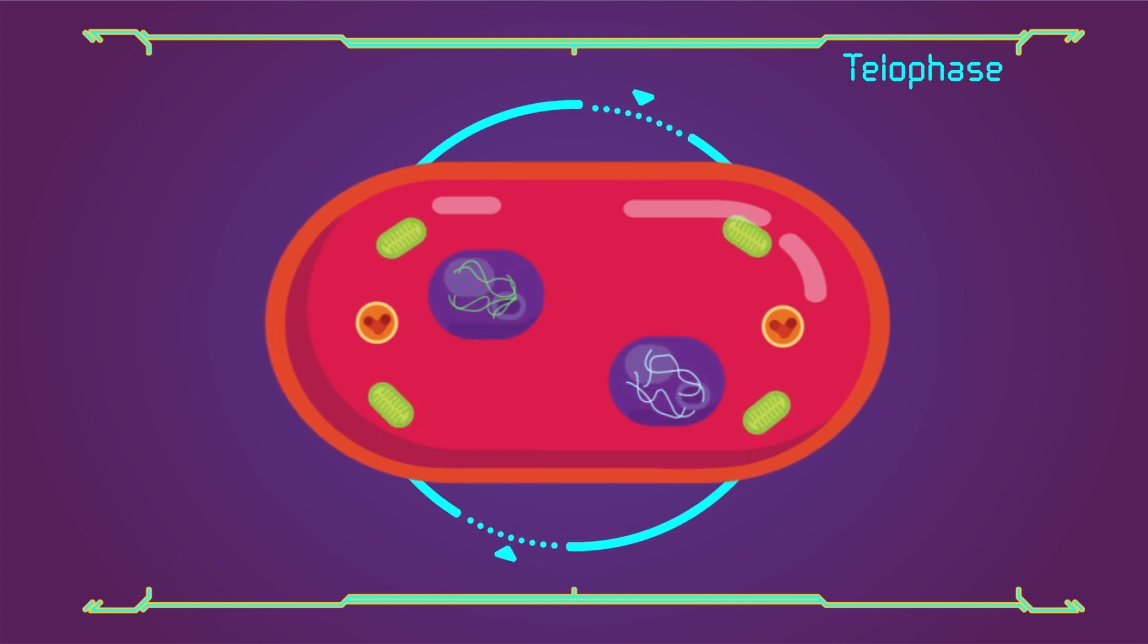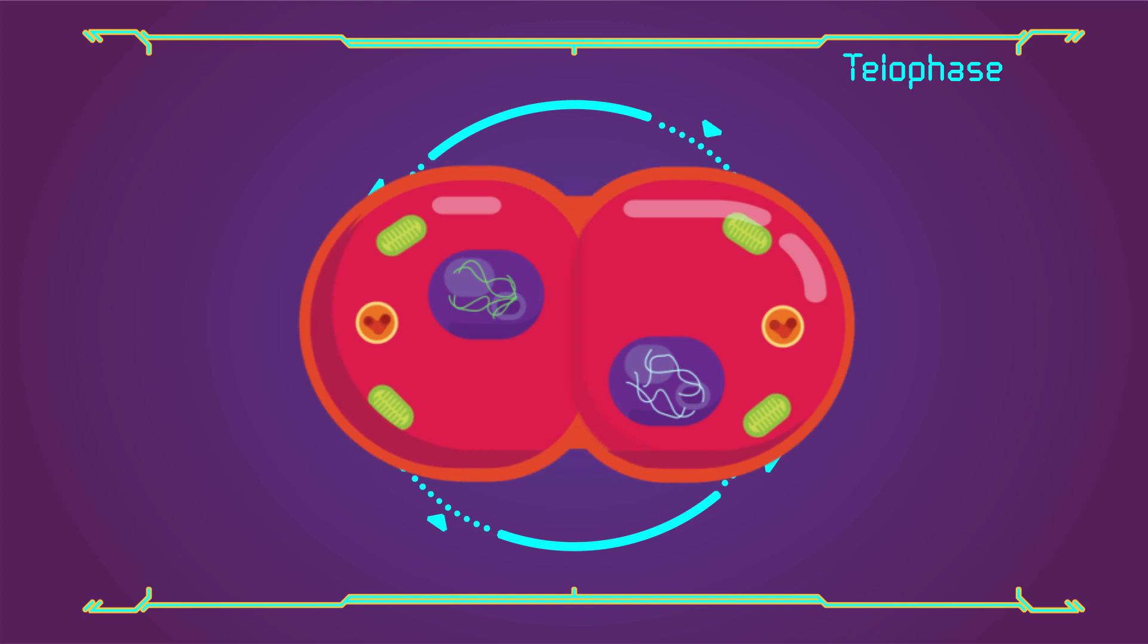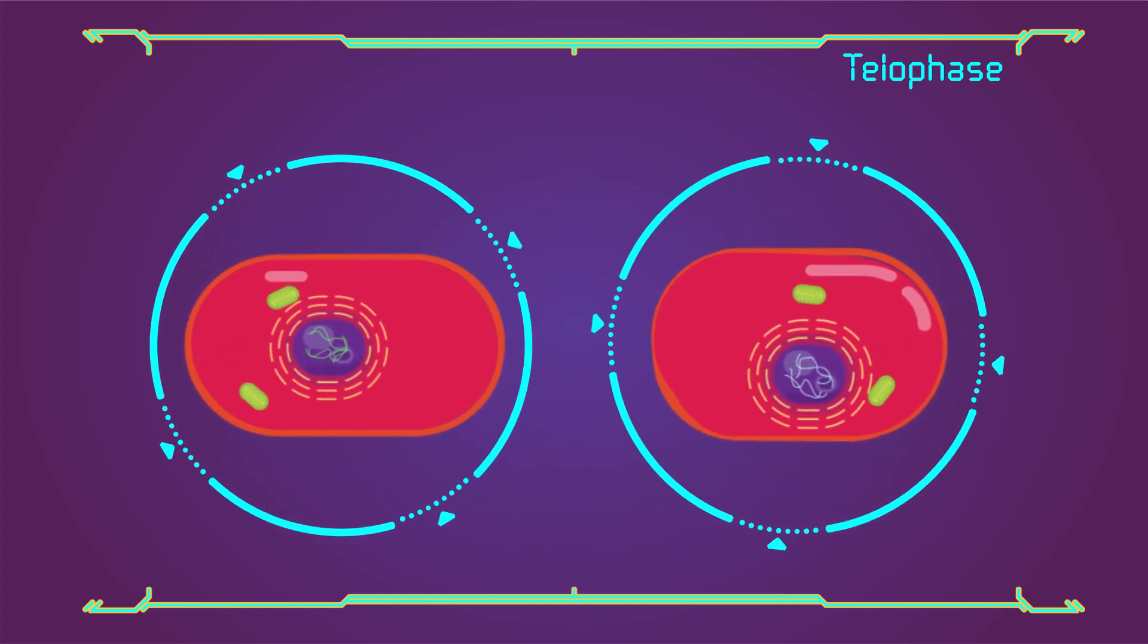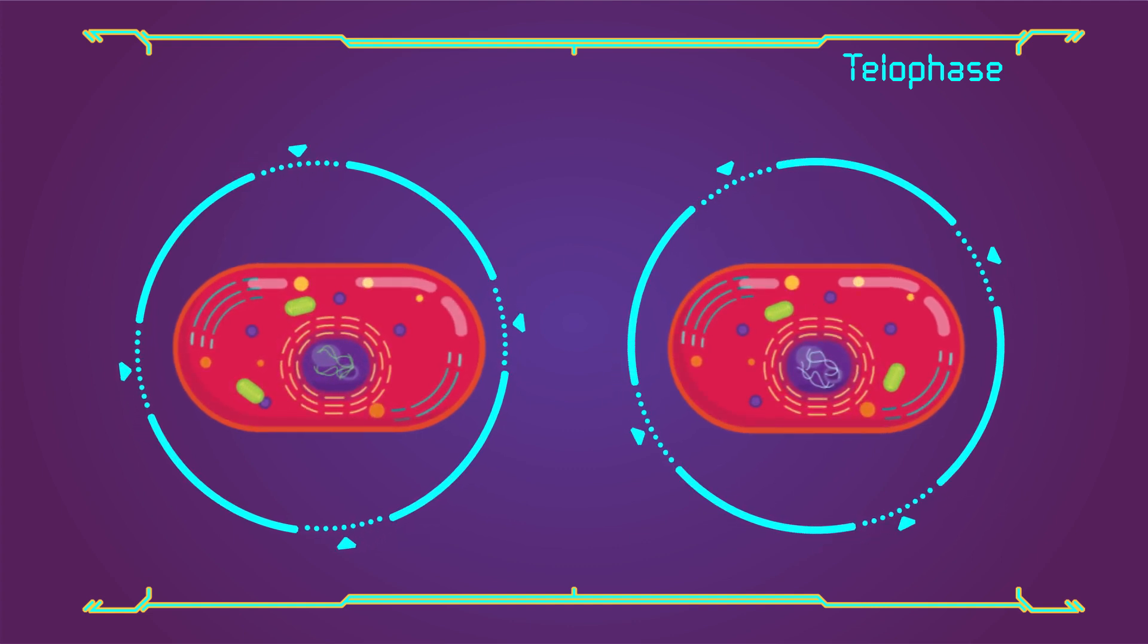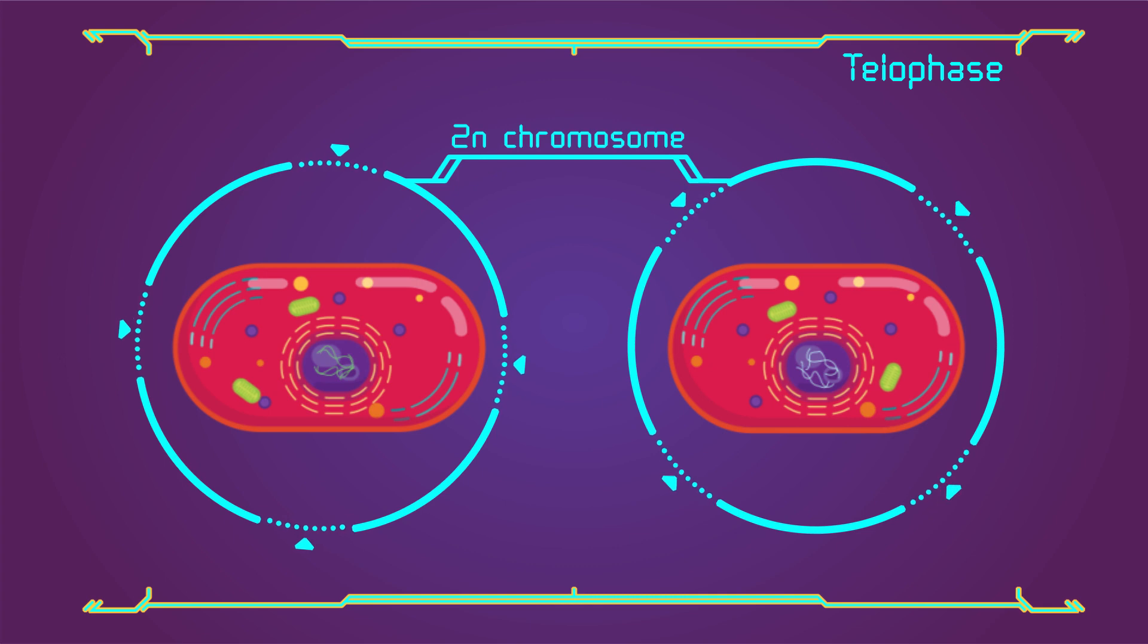Cytokinesis pinches the cell membrane in the middle. Cell membrane closes in and splits the cell into two. Now we have two separate cells, each with half of the original DNA. Up till now we have discussed what is mitosis and its different phases.